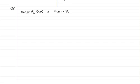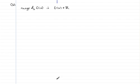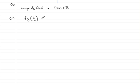Moving on now to part C. In part C, we're asked to find fg of k upon 4, giving our answer in its simplest form in terms of k. Starting with fg of k upon 4, I'm going to write that this is equal to f of whatever g was when we pass k upon 4 into it.